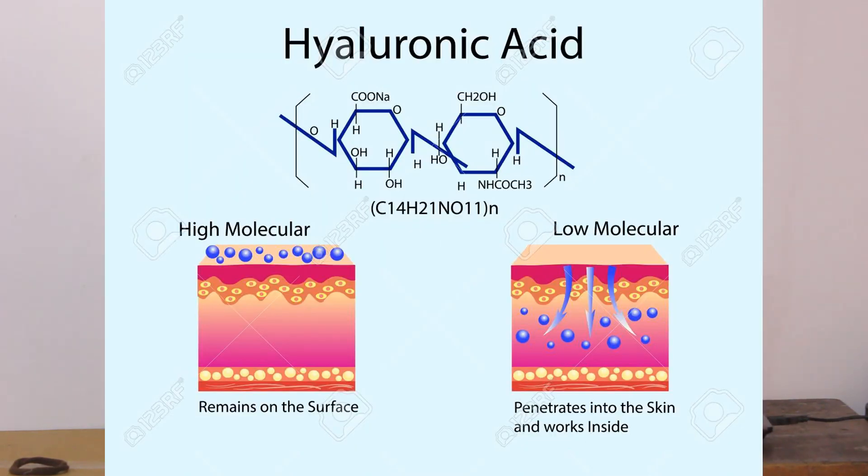Now that you know where hyaluronic acid is based — it is in the second layer of our skin where it is present in its natural form — our body produces hyaluronic acid to maintain the water content on the skin. Hyaluronic acid is a glycosaminoglycan. It sounds scary, but it is not. It is simply a very, very long chain of sugar — a polymer of disaccharides. Now we know what hyaluronic acid is.